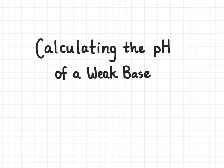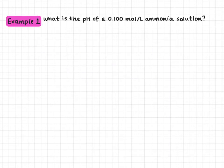In this video we're going to look at how to calculate the pH of a weak base if we know its initial concentration. Our first example is: what is the pH of a 0.1 mole per liter ammonia solution? Just as with a weak acid question, our first step in a weak base pH calculation will be writing down the reaction with water.